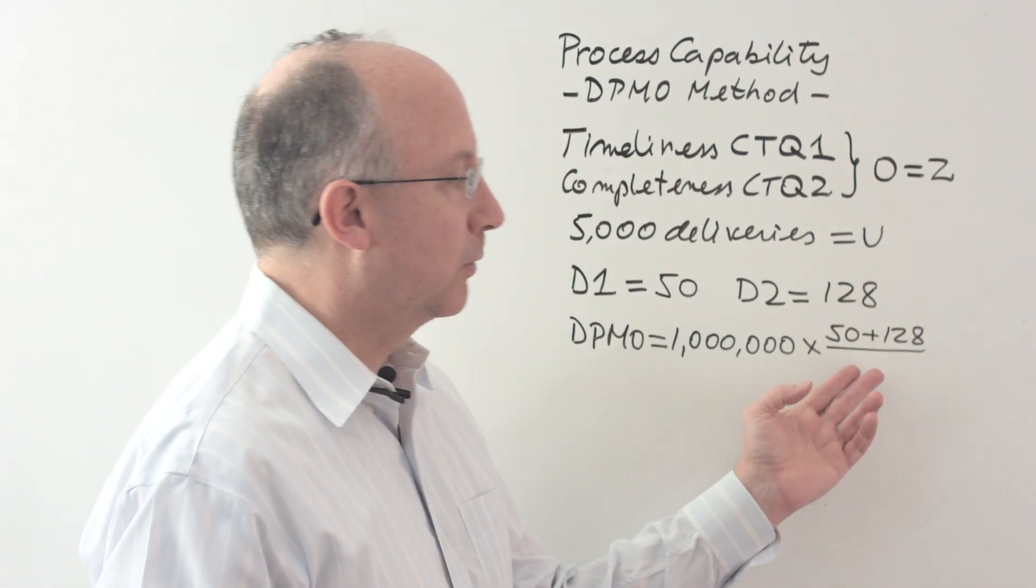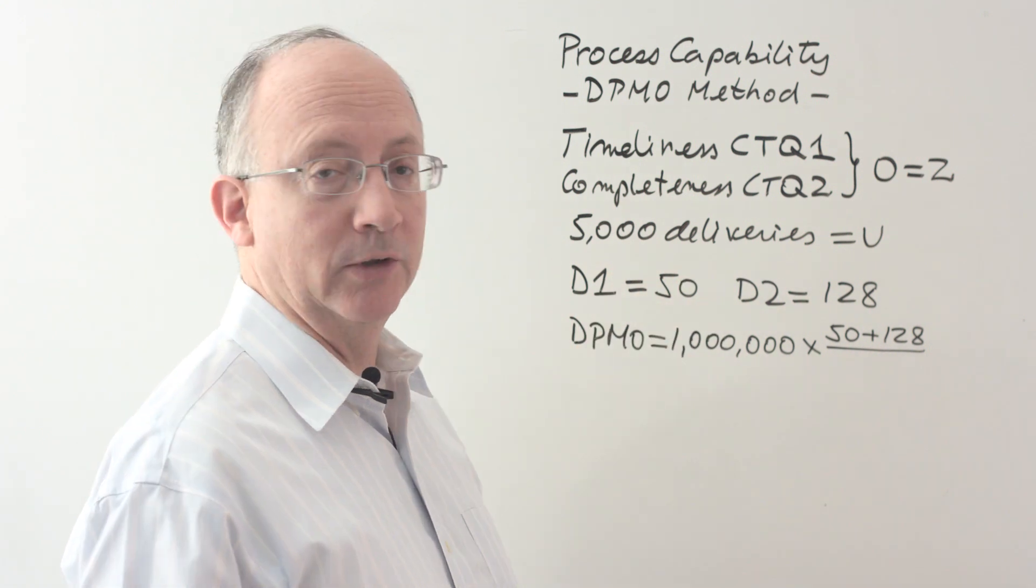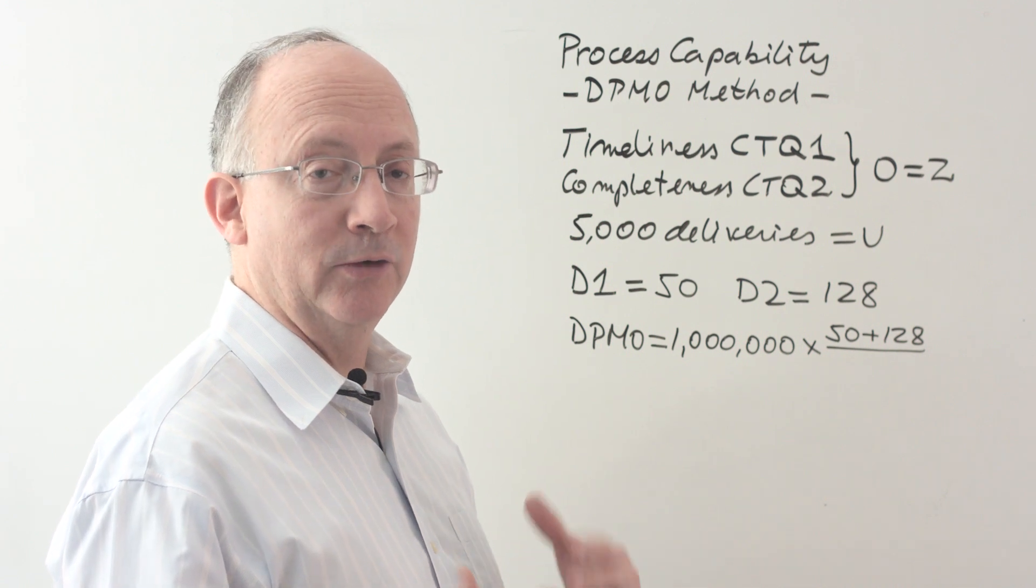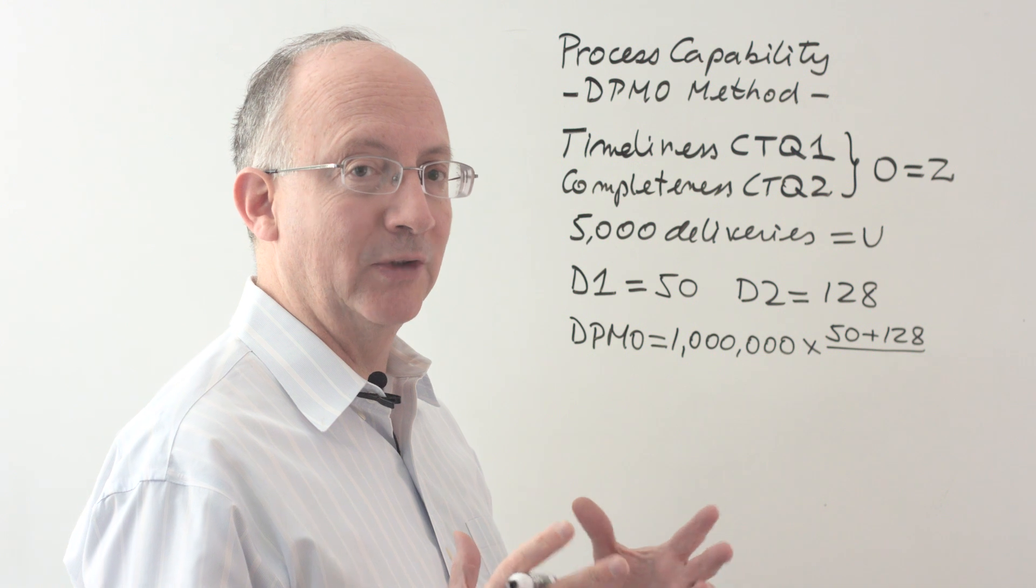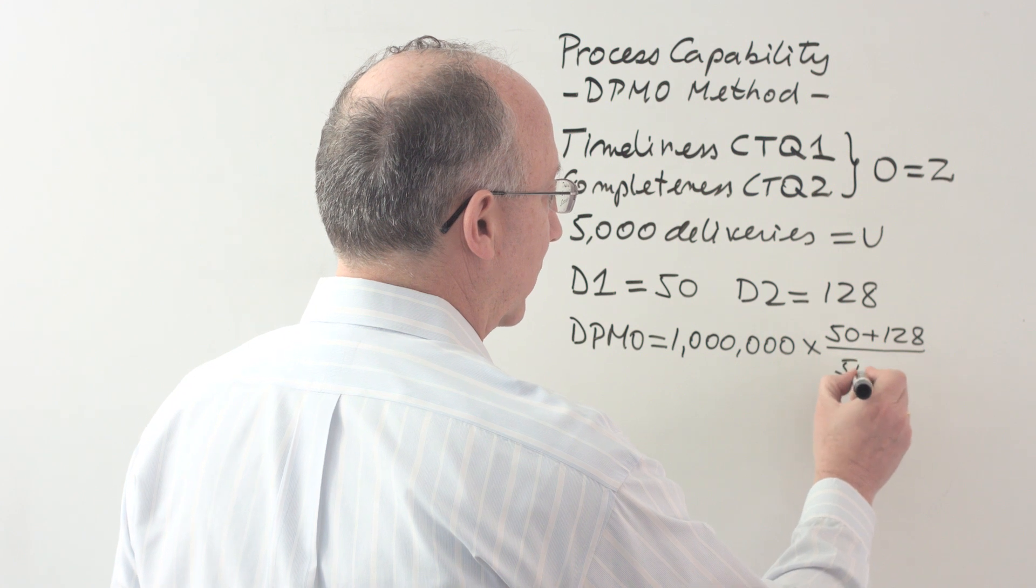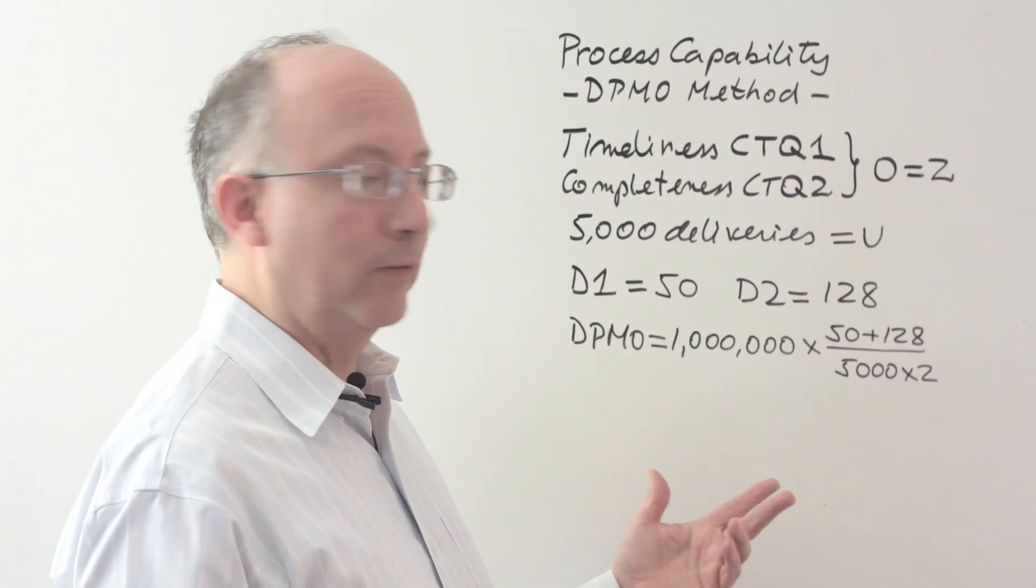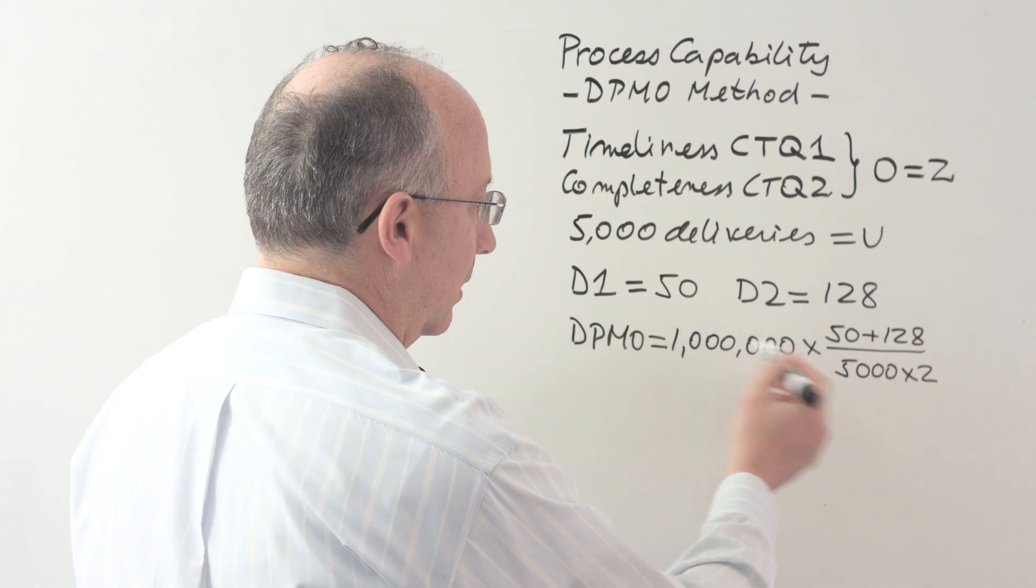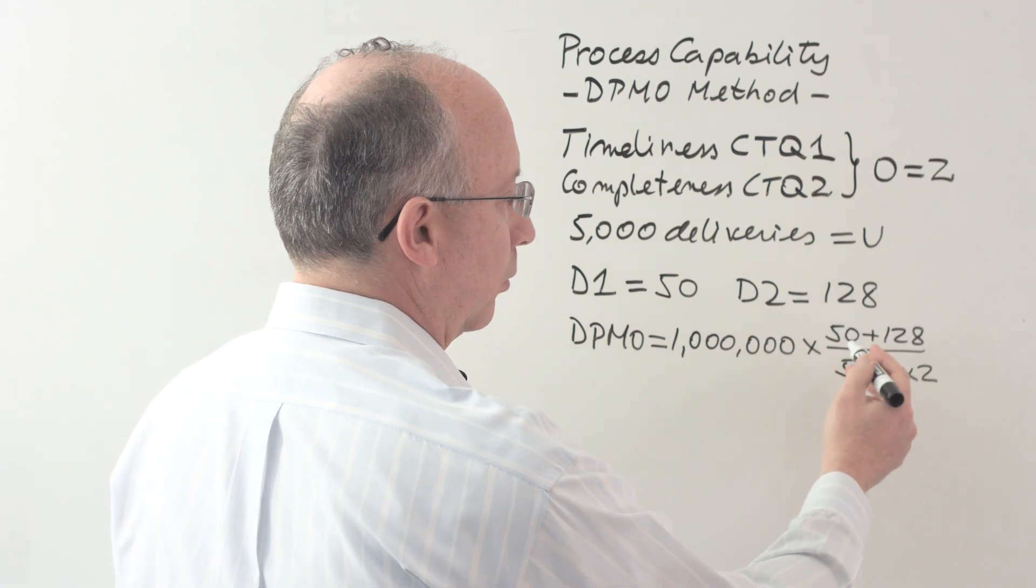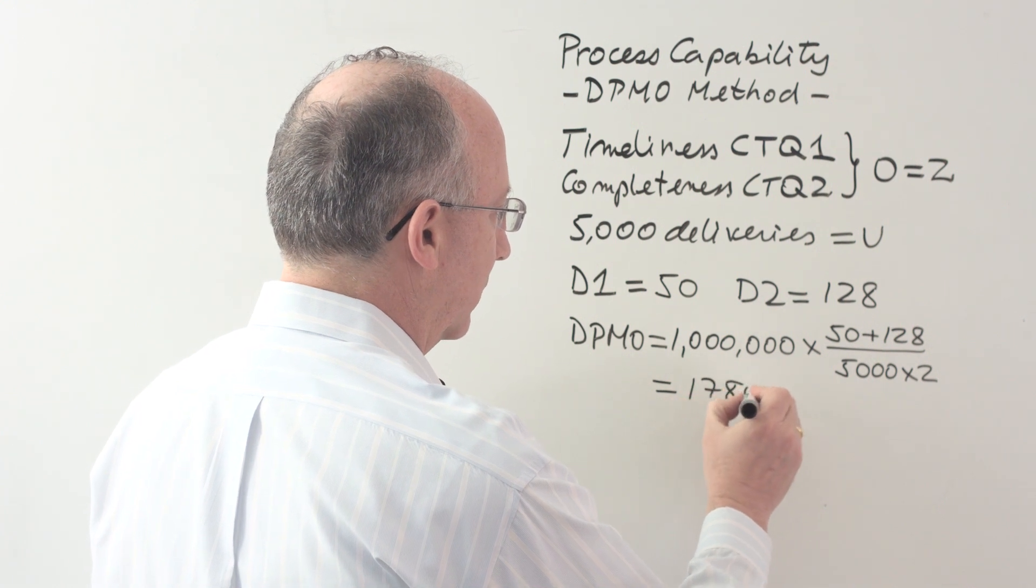And then, the total possible number of defects that we could have in the worst possible situation would be that all of the deliveries, the 5,000 deliveries, are at the same time late and also incomplete, for a grand total of 10,000 maximum number of defects. That would be if we were to multiply the 5,000 deliveries times two defects for each one. When you do the arithmetic of this, you're going to find that this number is 10,000, which is four zeros, you end up here with two zeros, so that's a hundred, plus the 178, you're going to end up with a DPMO equal to 17,800.